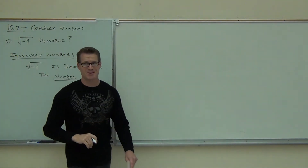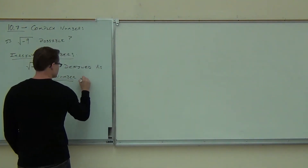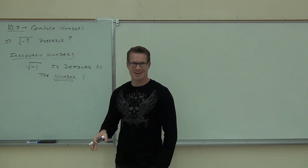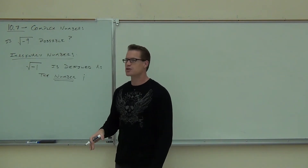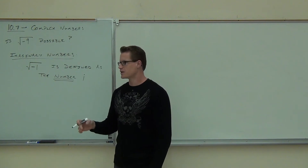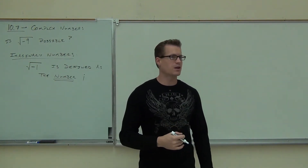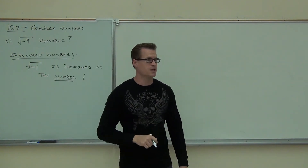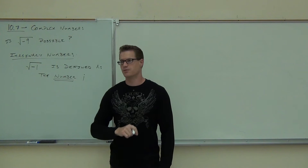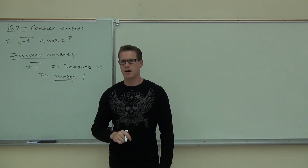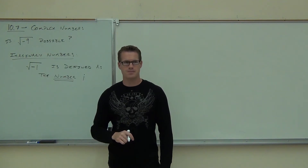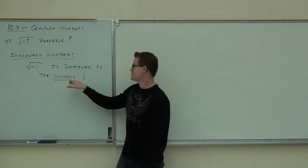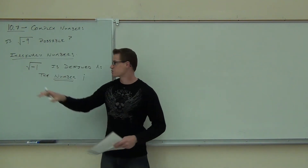We're defining the square root of negative 1 as the number i. I is a letter, but i here is not a variable — you can't plug anything in for i; it doesn't have a changing value. How much is i? The square root of negative 1. Not negative 1 — the square root of negative 1. Every time you see i, it means the square root of negative 1, and every time you see the square root of negative 1, it means i. These things are interchangeable; they are the same exact value.